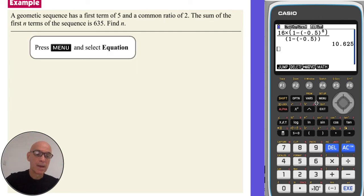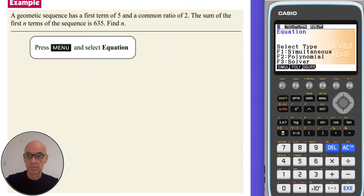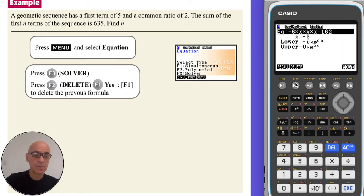From the main menu, if we select equation. And then press F3, the solver. F2 to delete any previous equation. And F1 to confirm the deletion. We're then ready to type in our equation.